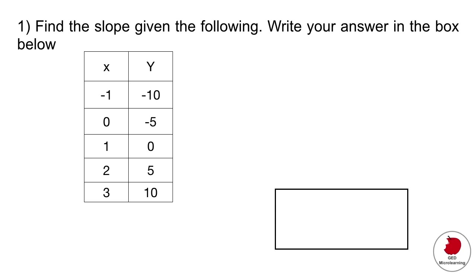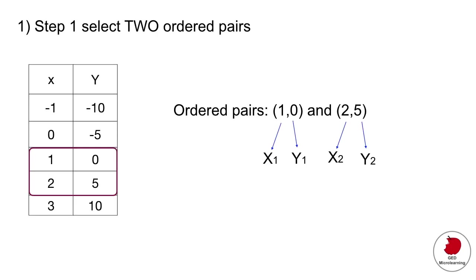The first question is a slope problem where they give you a table with different ordered pairs and it says find the slope given the following — write your answer in the box below. As you can see, they're giving you this table with x and y values, and what you have to realize is that these are coordinates or ordered pairs. Step one would be to select two ordered pairs.